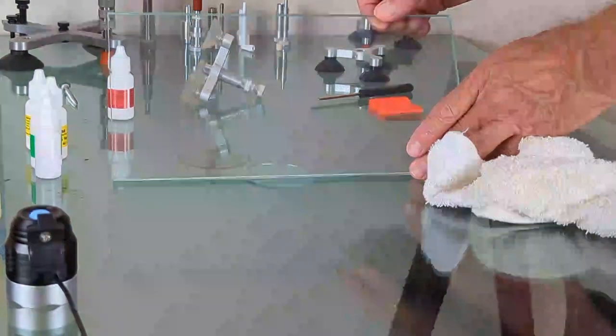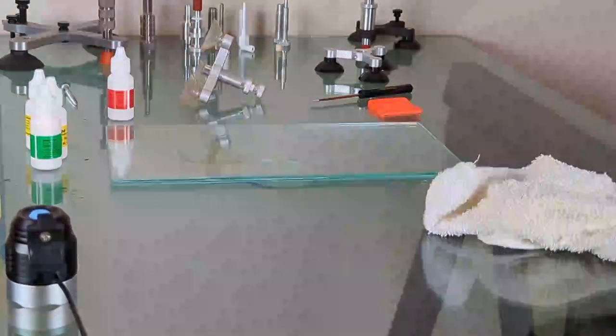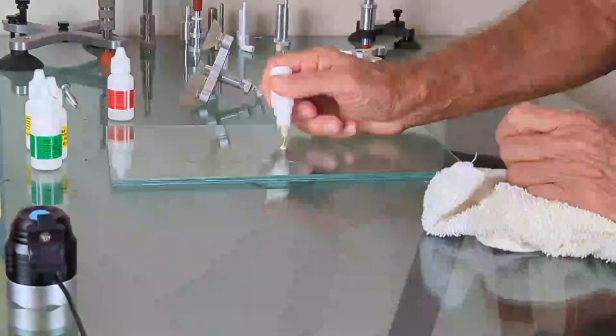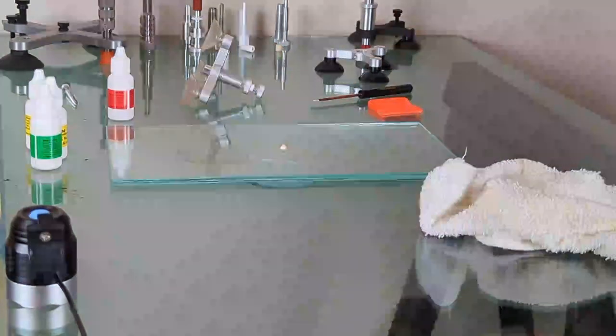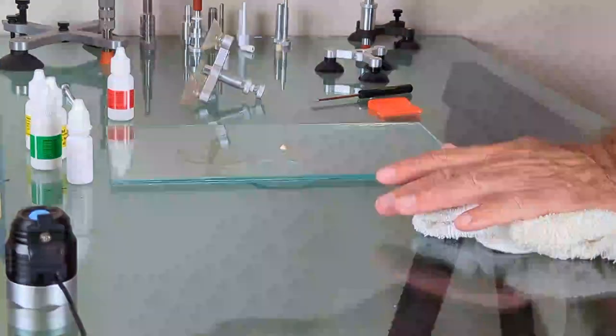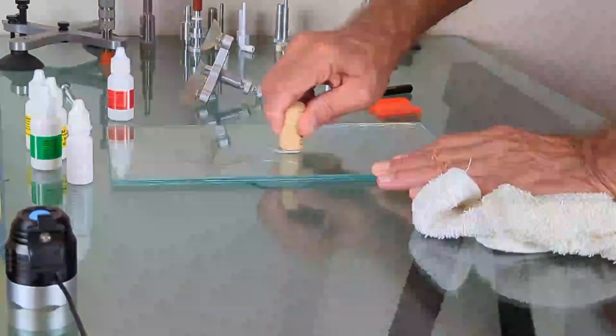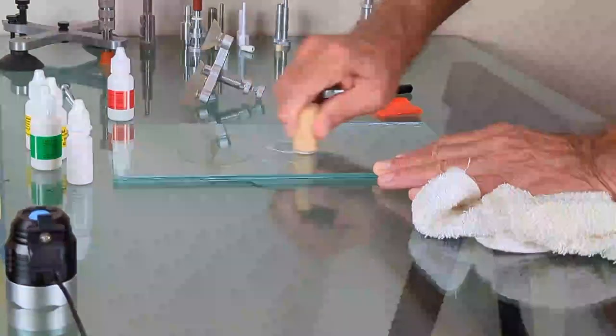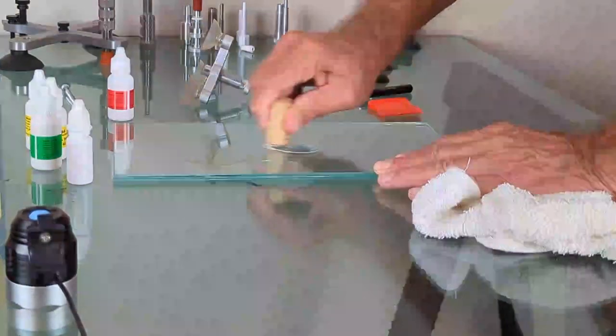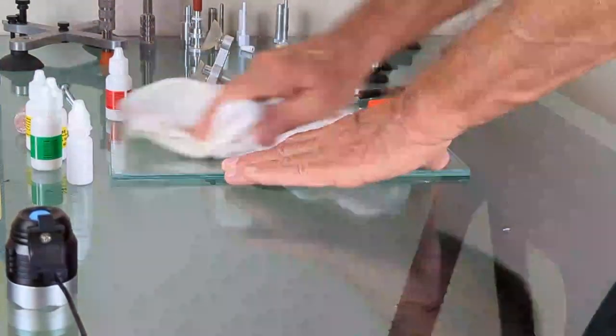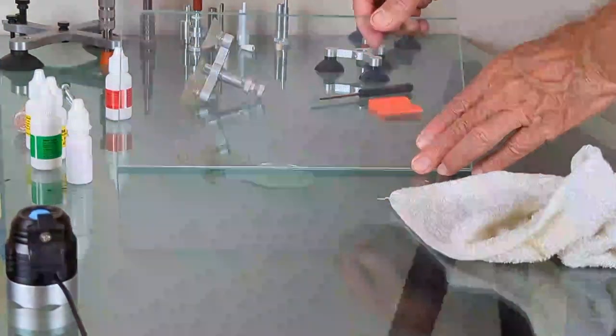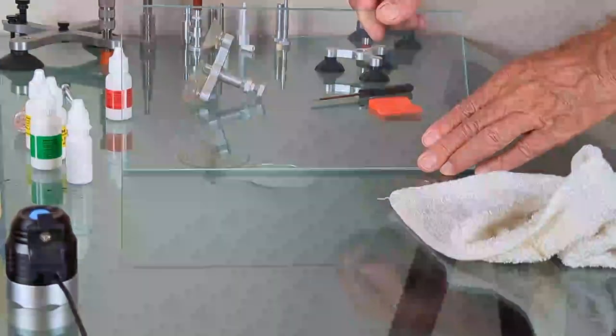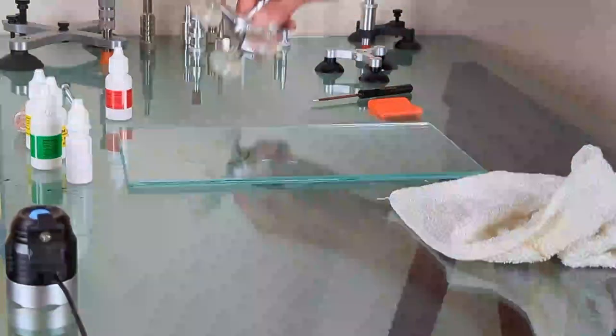Then the other way which you can do either this way or in addition to what you just did, just put a drop of our pit polish on there and then use a wine cork and polish it.